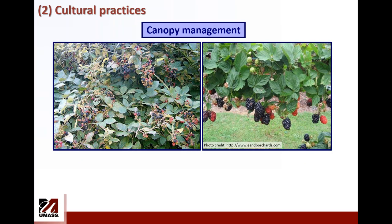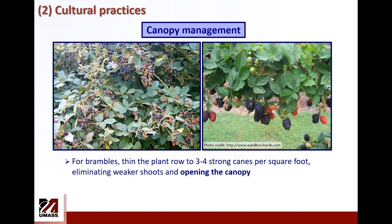The second cultural practice you can implement is canopy management — pruning to open the canopy, to increase insecticide penetration and coverage. By having less foliage, there is the opportunity to kill more flies. Removing foliage can also make the crop somewhat less attractive to the fly. The key is to open the canopy and remove excess foliage.